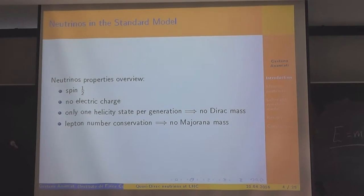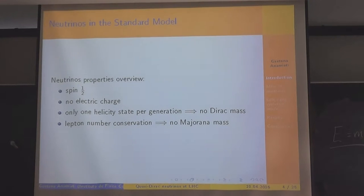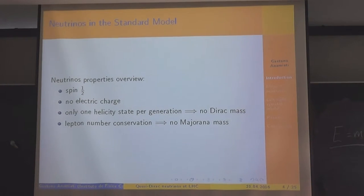Let me start from an overview about neutrino properties in the standard model. We know that a neutrino is a particle with spin one-half and it has no electric charge. In the standard model, neutrinos are massless because only one chirality state per generation is present for a neutrino, so there is no direct mass term.